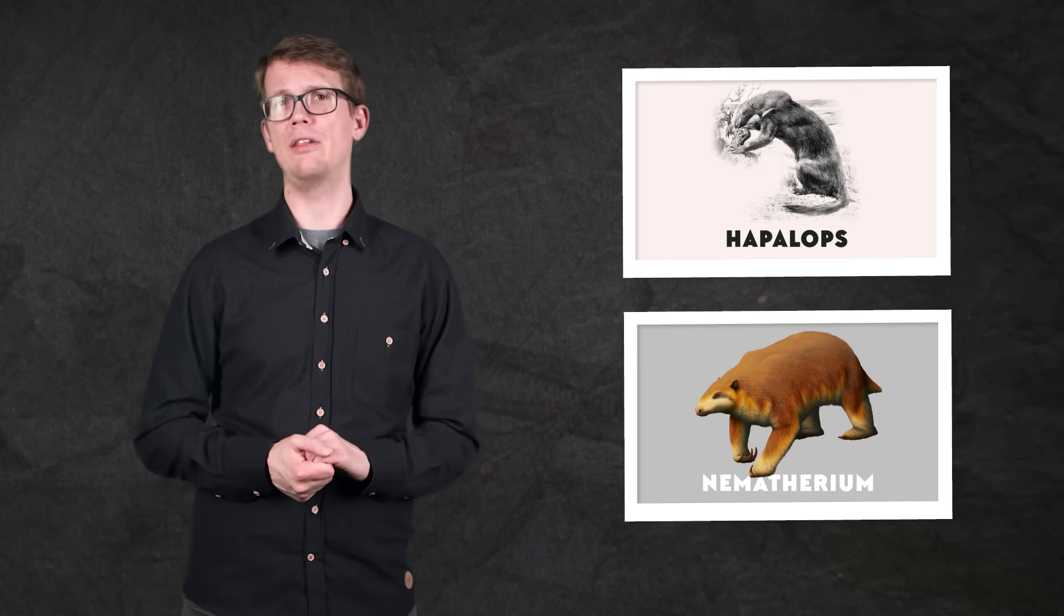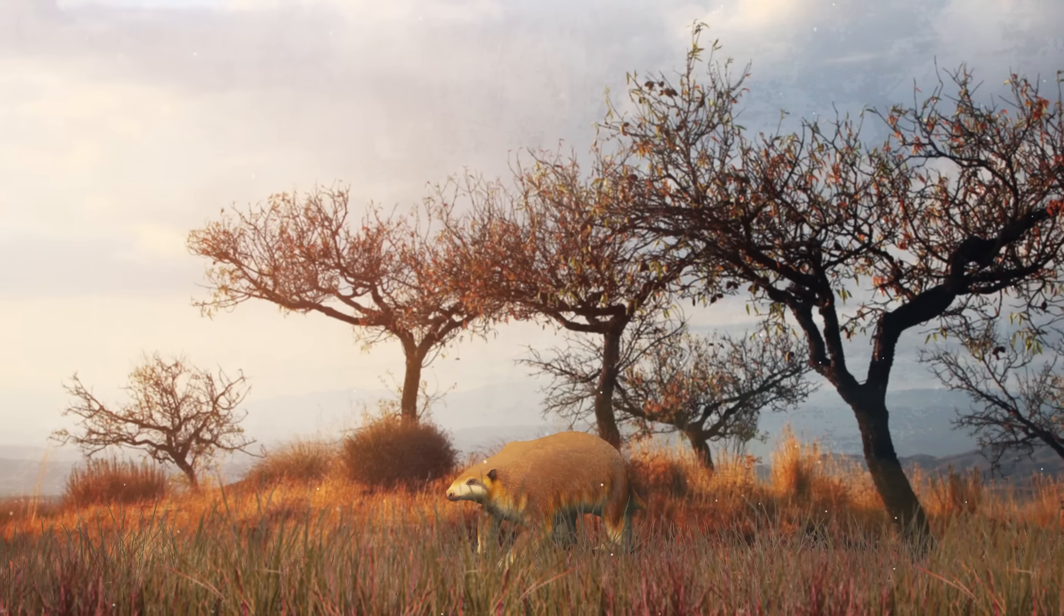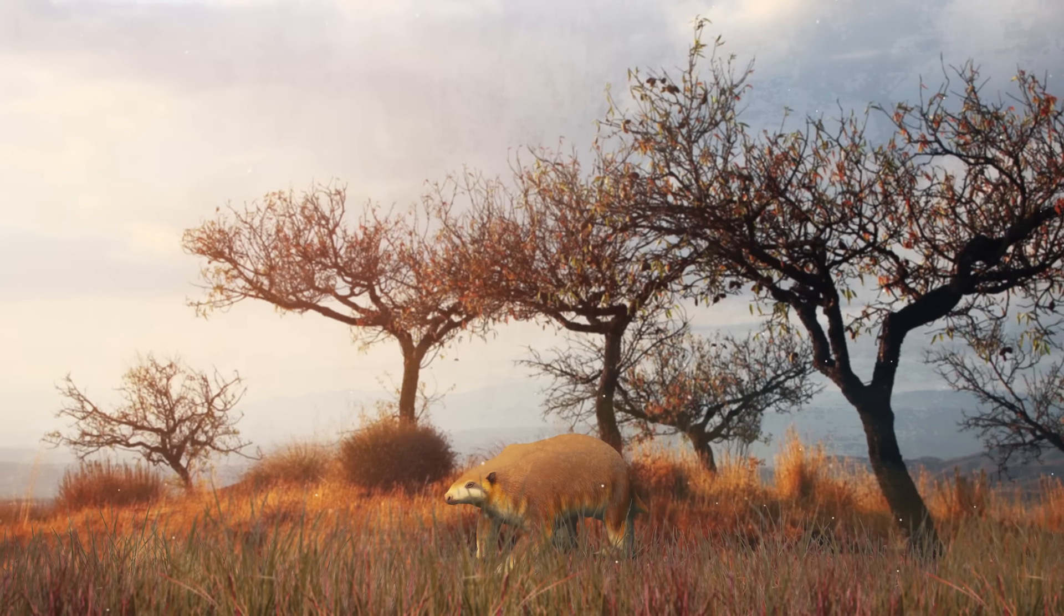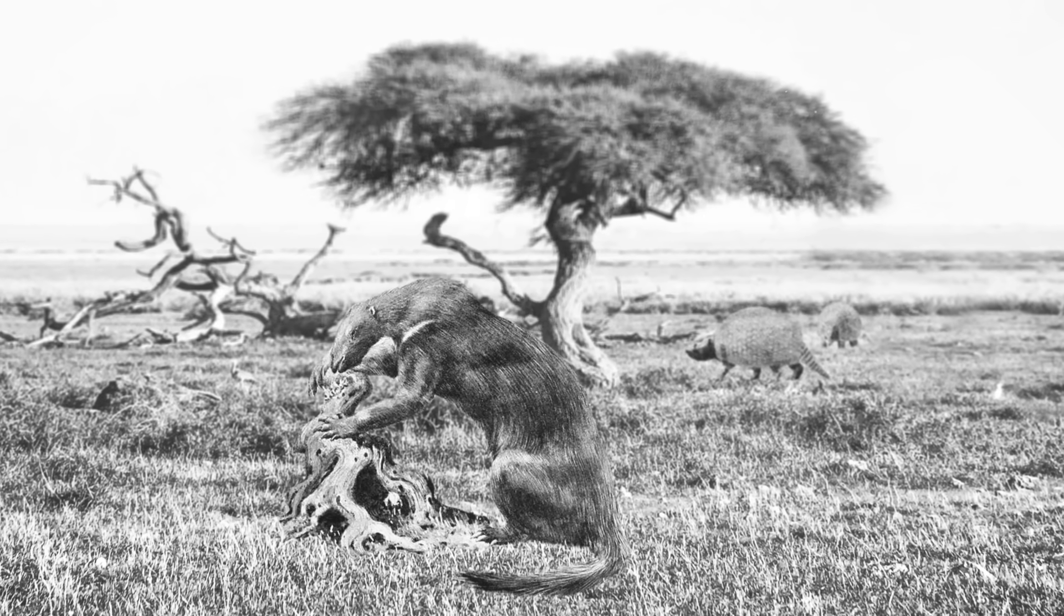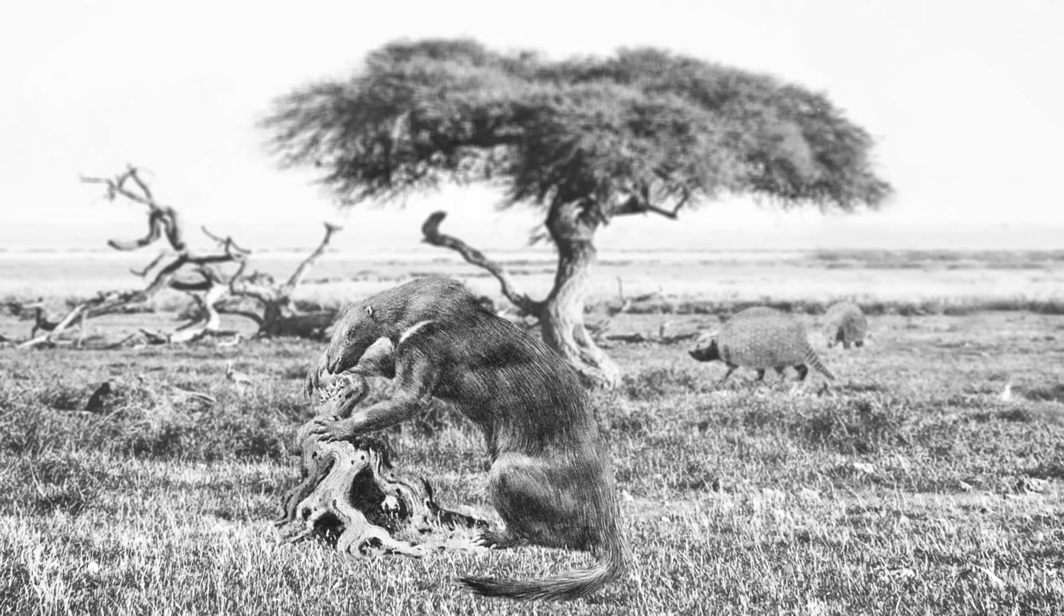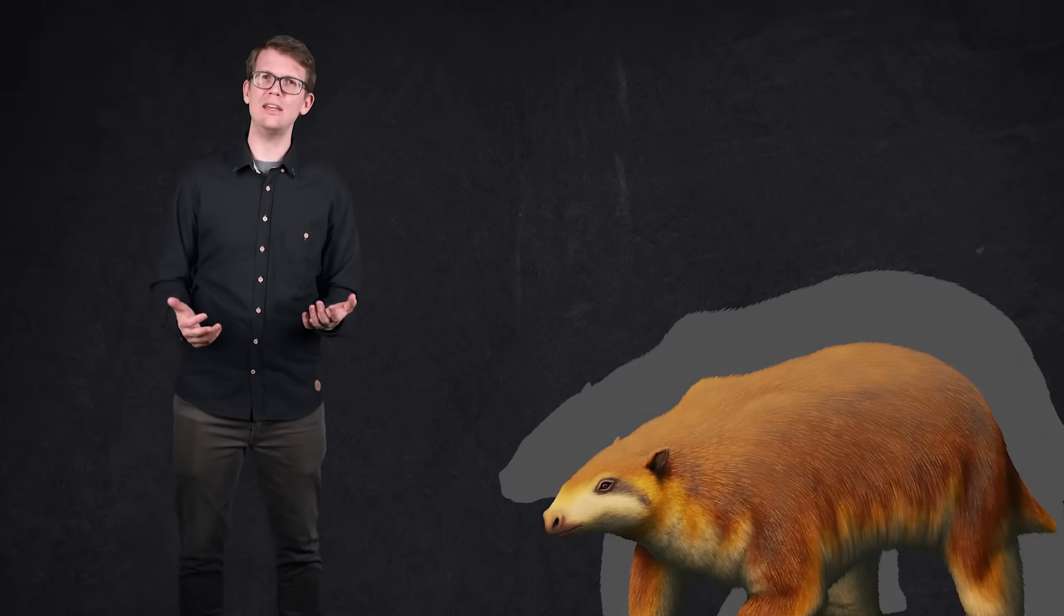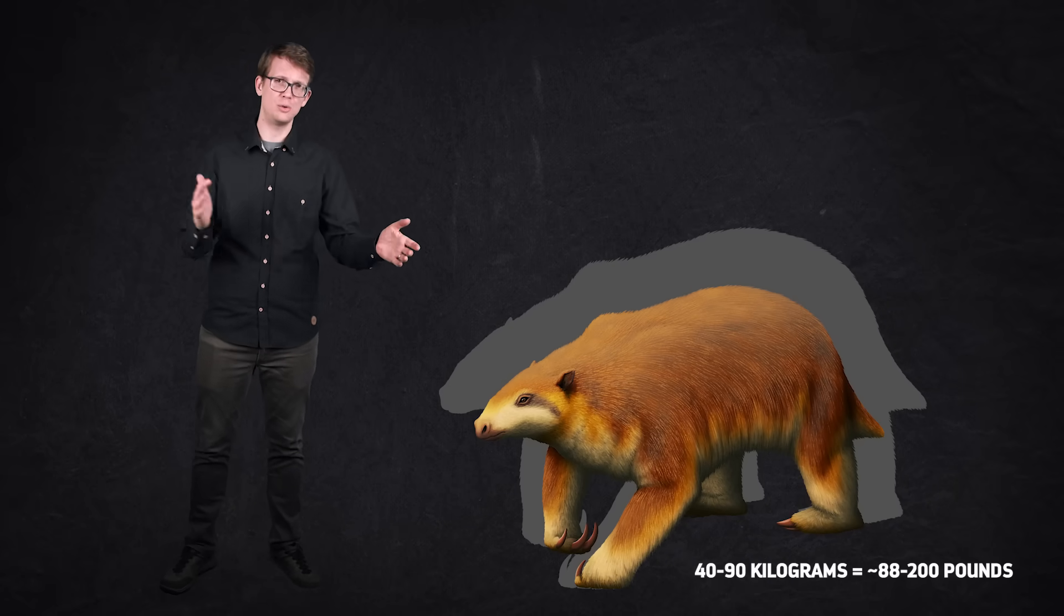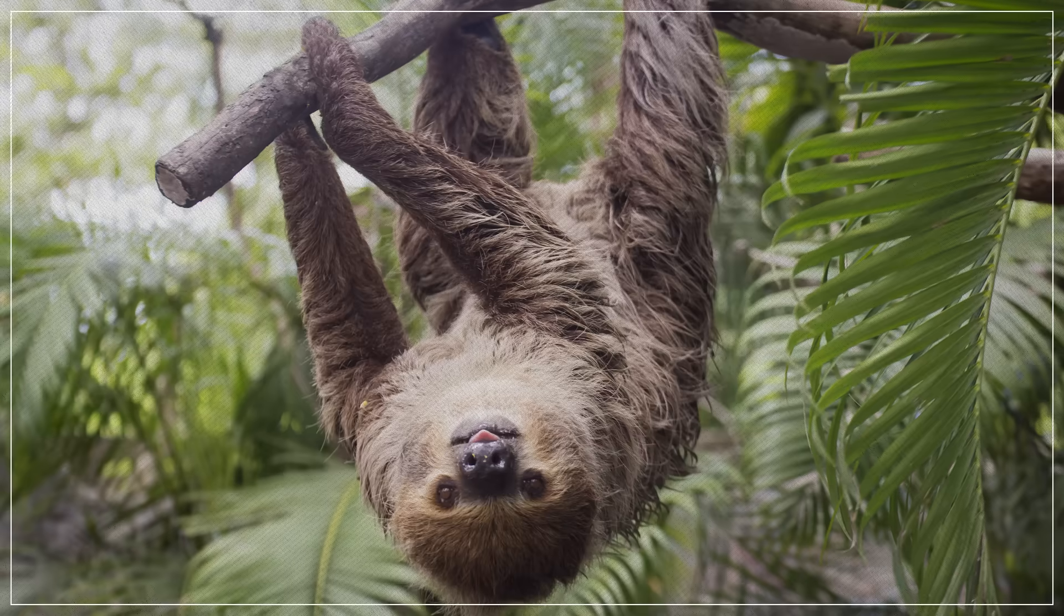As early as the Miocene Epoch, semi-arboreal sloths can be found in the fossil record, like Hapalops or Nematherium. Both of them had flexible elbow joints that suggest they could climb trees, and they're probably ancestral cousins of the modern two-toed sloth. But they weren't small like the sloths we know today. Weighing between 40 and 90 kilograms—say, from the size of a deer to a kangaroo—they could only have been supported by the very biggest branches, and they definitely didn't hang upside down.